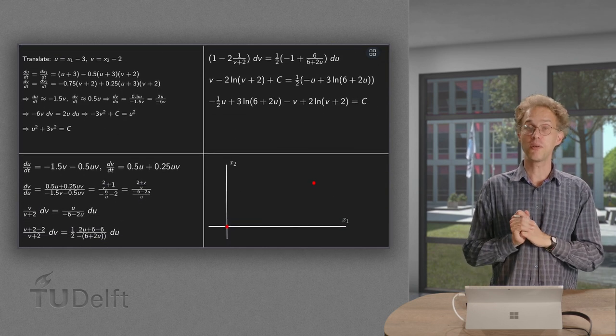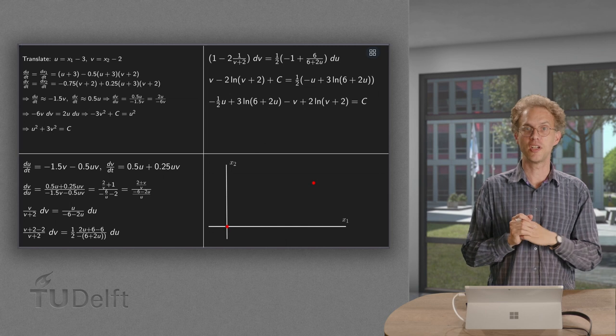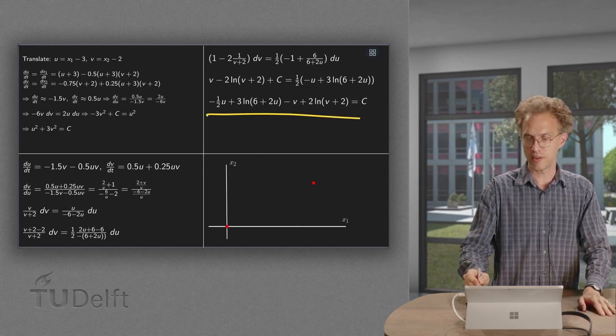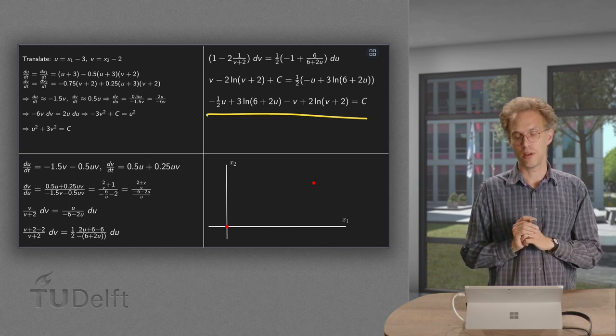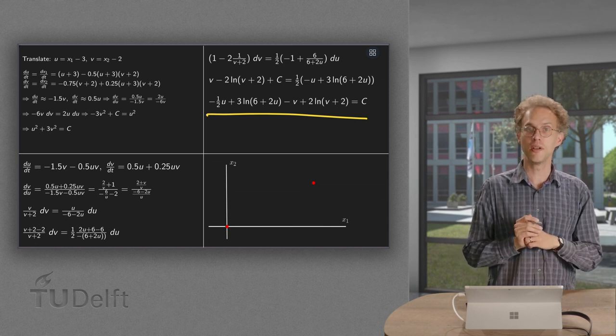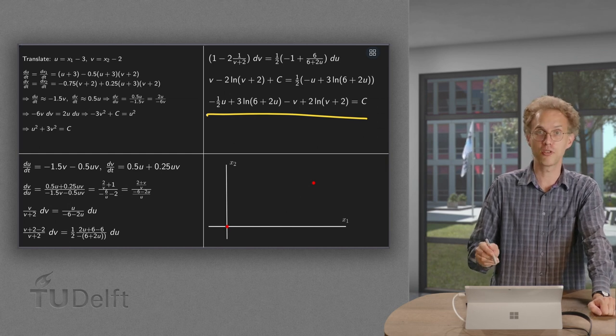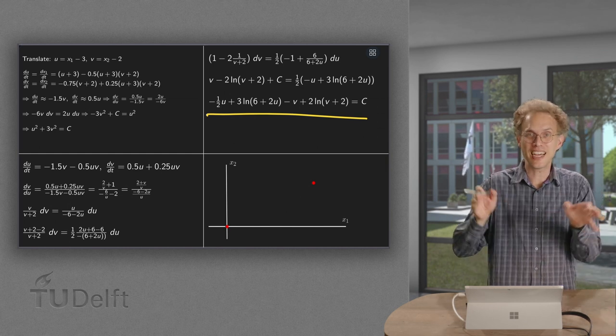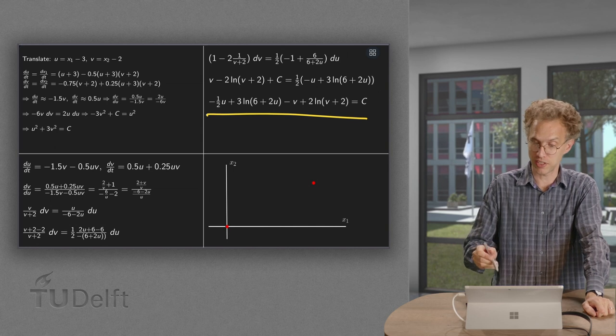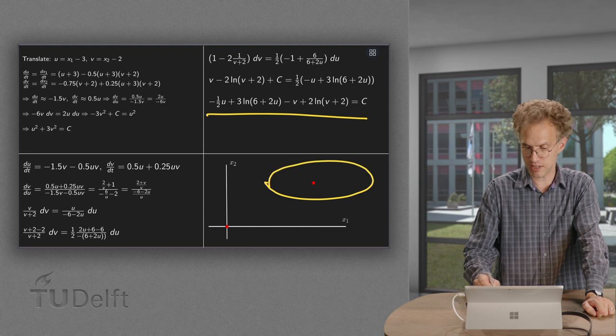Now how does this look? We can actually sketch this equation. Of course for this one we need a computer software in order to sketch this curve. It's not so easy. However if you use this software we can see how the parametric curve looks like. Not exactly an ellipse anymore but something which quite closely resembles an ellipse.